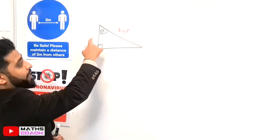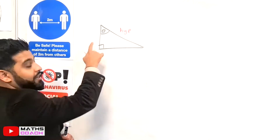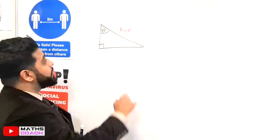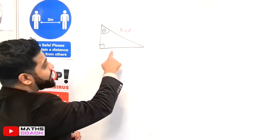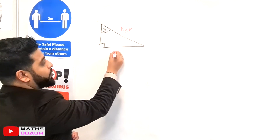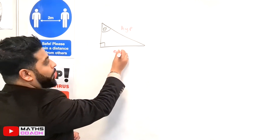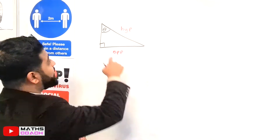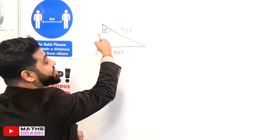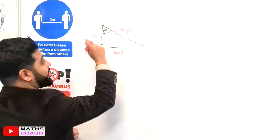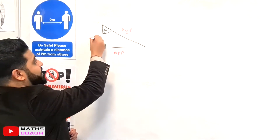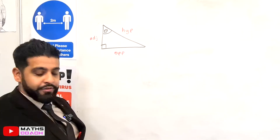The other two sides are labeled according to the angle. This side here is opposite the angle, so we're going to call it 'op' for opposite. And this side here is adjacent - next to the angle - so we are going to call it 'adj' for adjacent.